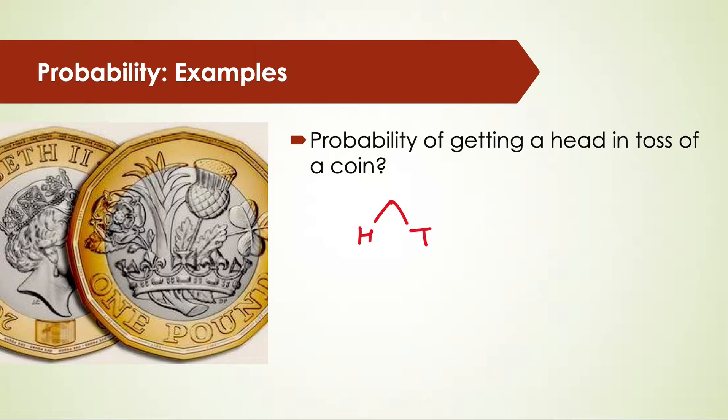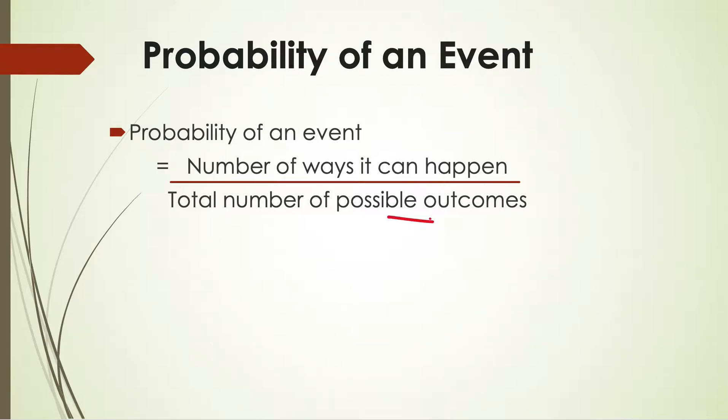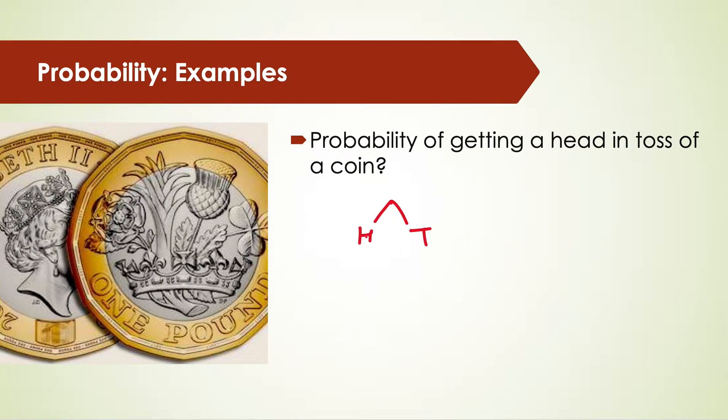We are interested in head, so the event here is landing head, which can occur in one way. Total number of outcomes is two, so the probability is one over two, or 0.5.